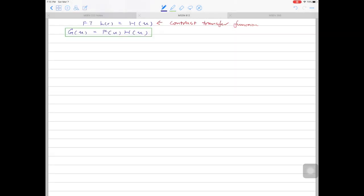The contrast transfer function H(u) can be written down as a product of three terms. That's A(u), E(u), and B(u).